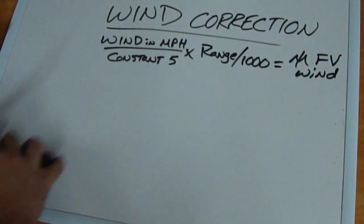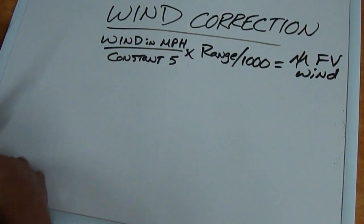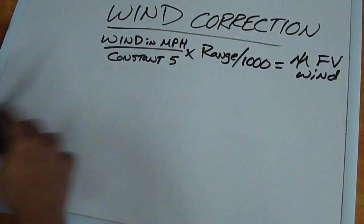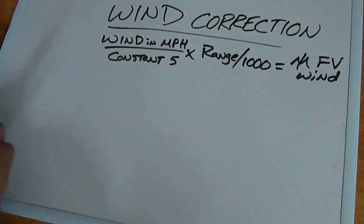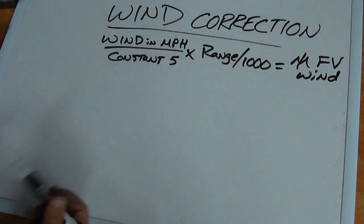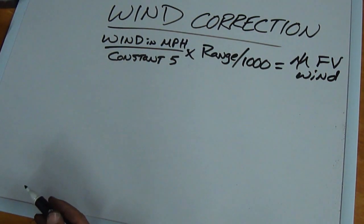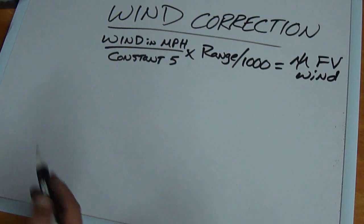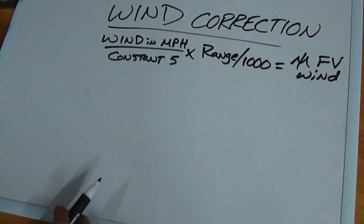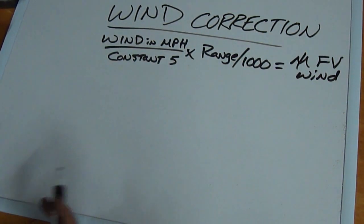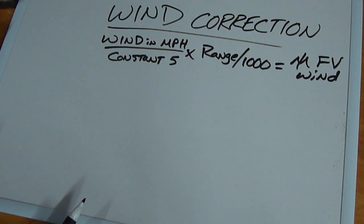This is where your ballistic calculators really do kind of show their worth, because these conditions are going to change depending on density, altitude, your load, etc. This is a good rough formula if you don't have a ballistics calculator or computer, something like that, you're out there behind the gun. This is going to give you a ballpark area to get started from. But keep in mind, that's all it is. It's a ballpark area. You're going to have to shoot to confirm it, really.